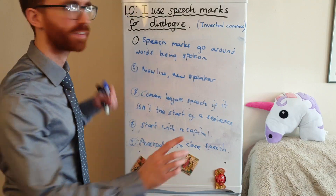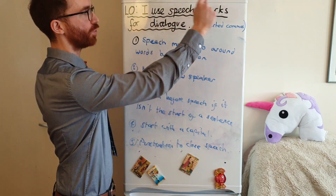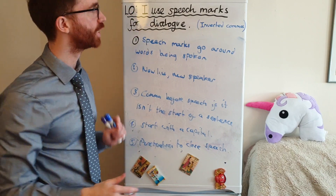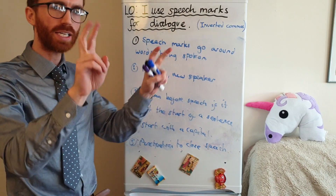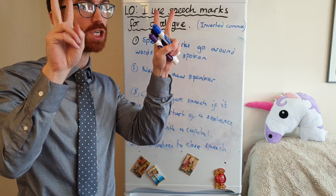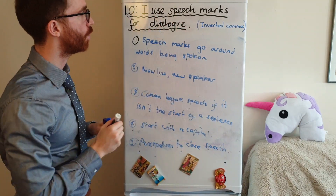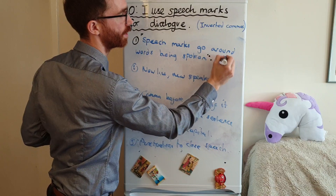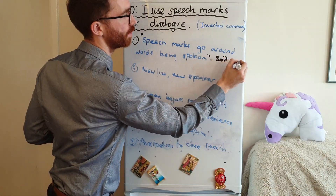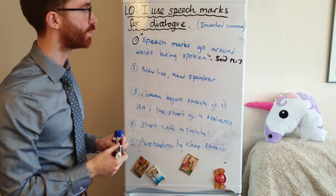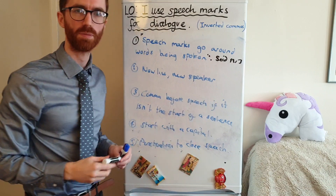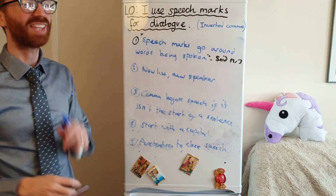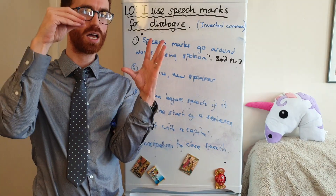Today's lesson is: I use speech marks for dialogue. Let's just check that we understand that learning objective. Speech marks are the little things that go around words being spoken. Said Mr. J — if I did say that, speech marks go around the words being spoken, said Mr. J, because I said that. So it goes all around the words that are being said.